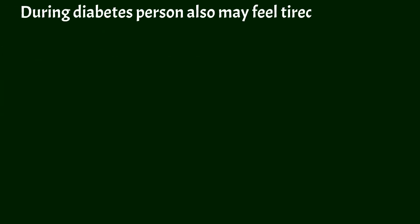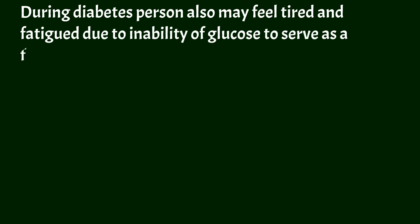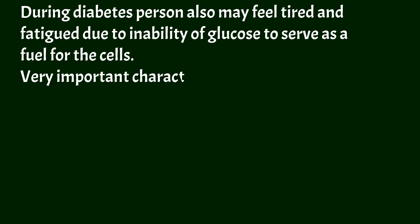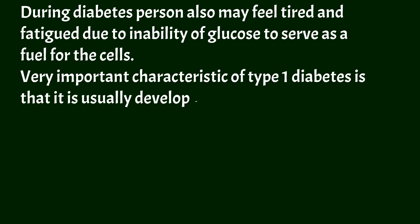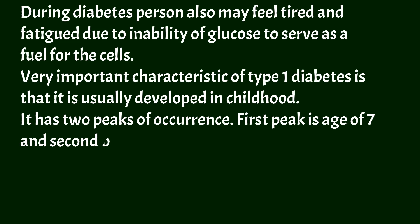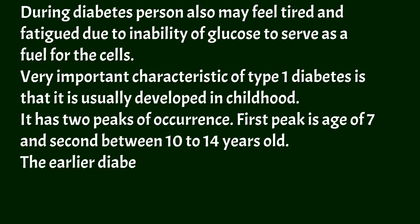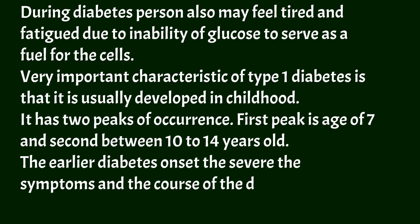During diabetes, a person may also feel tired and fatigued due to the inability of glucose to serve as fuel for the cells. An important characteristic of type 1 diabetes is that it usually develops in childhood, with two peaks of occurrence: the first at age 7, and the second between 10 and 14 years old. The earlier the diabetes onset, the more severe the symptoms and course of the disease.